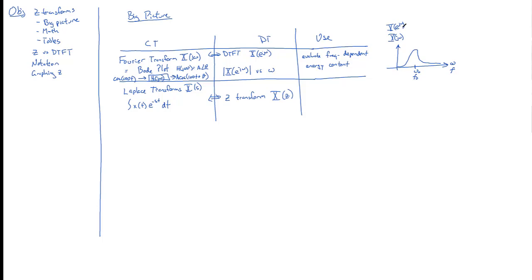And then if it was a transfer function, H of E to the J omega or H to the J omega, then we'd say that this is a bandpass filter and it only passes frequencies around omega-naught or F-naught.